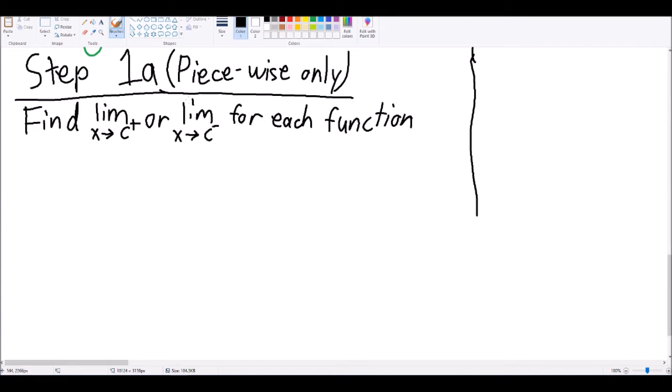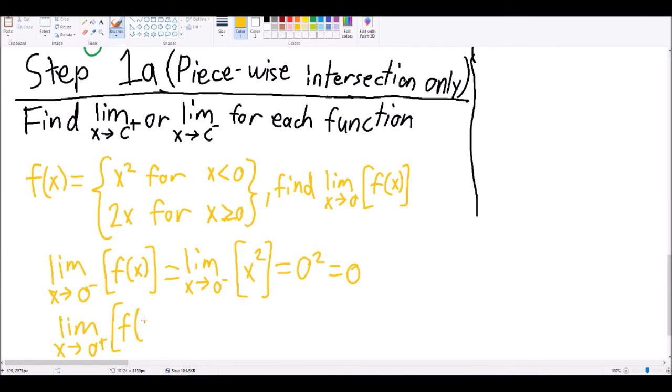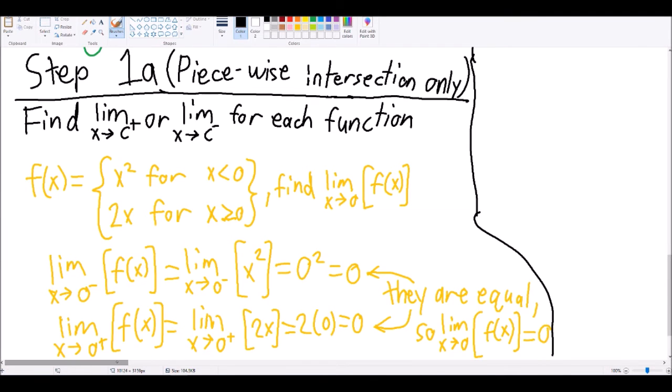And step 1a, for piecewise functions where the value is the intersection of the functions, you can find the limit as x approaches from above and below, plug in the value into each function that's intersecting, and see if they equal each other. If they don't, move on to step 2.